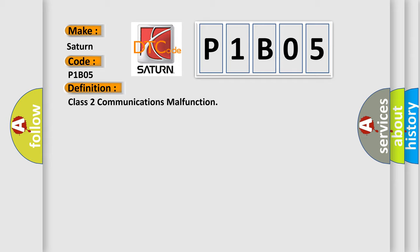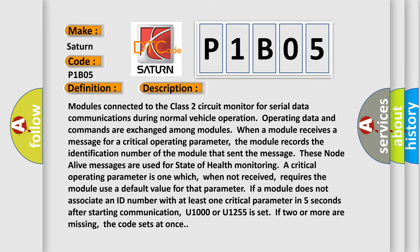And now here is a detailed description of this DTC code. Modules connected to the Class 2 circuit monitor for serial data communications during normal vehicle operation. Operating data and commands are exchanged among modules. When a module receives a message for a critical operating parameter, the module records the identification number of the module that sent the message. These node alive messages are used for state of health monitoring.